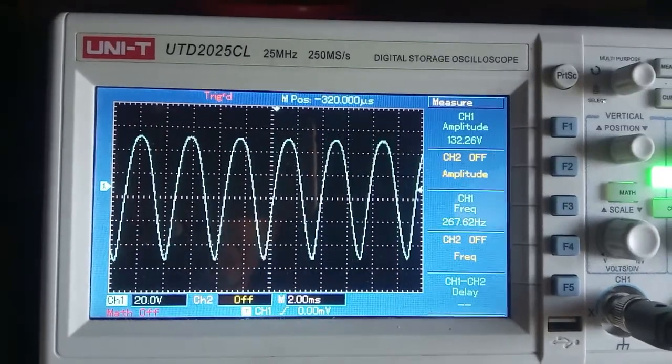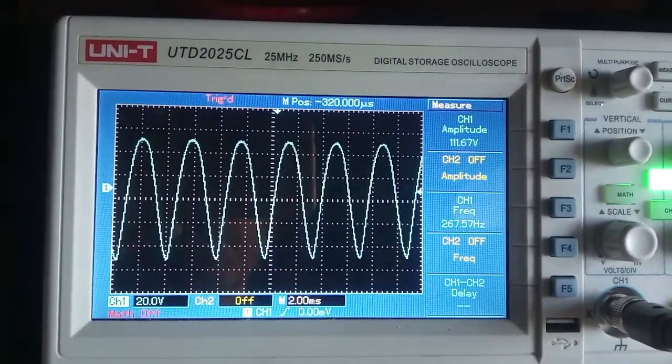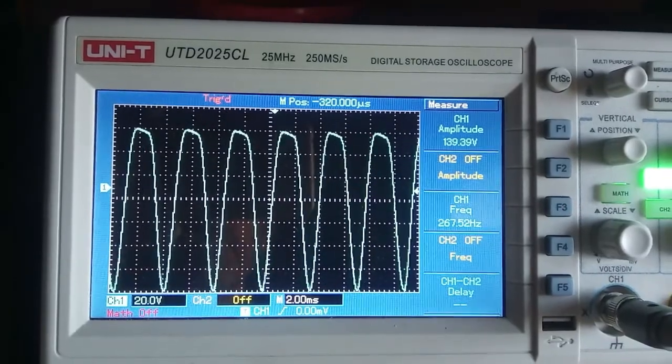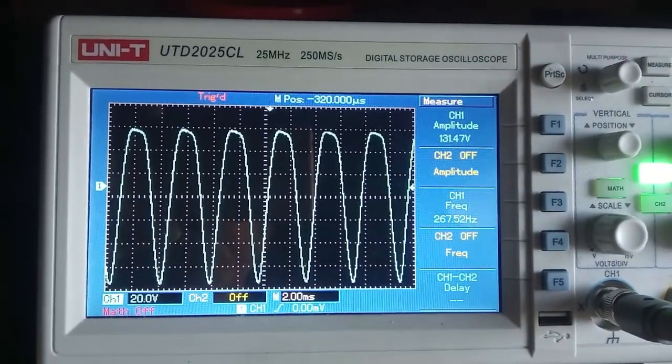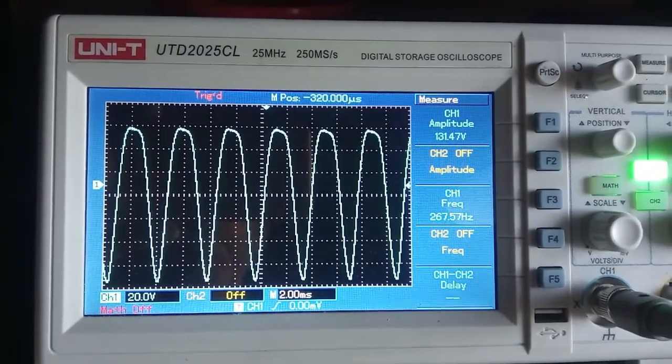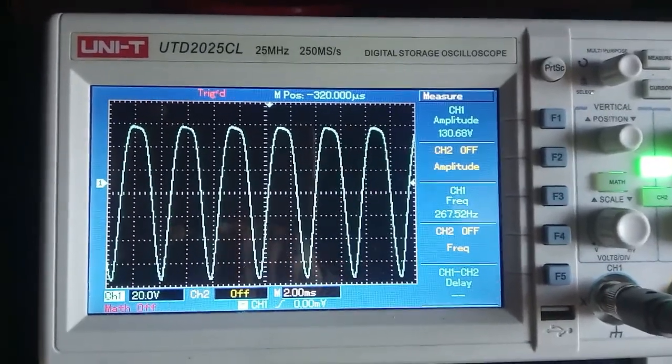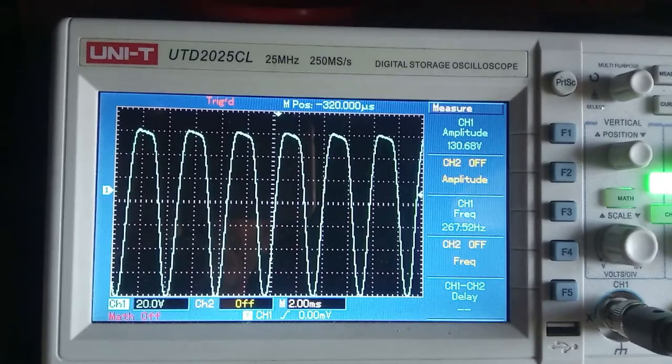Finally we can see the cold bias. We see the distortion appears in the positive lobe of the anode voltage. This is due to the cutoff of the tube and the distortion is more severe than the saturation clipping.